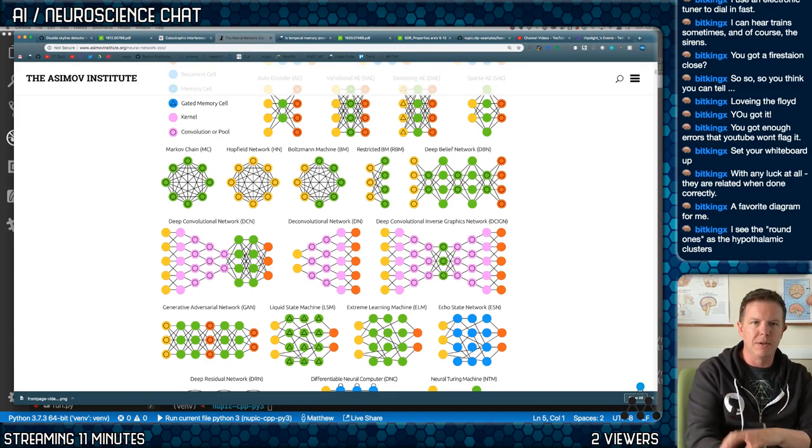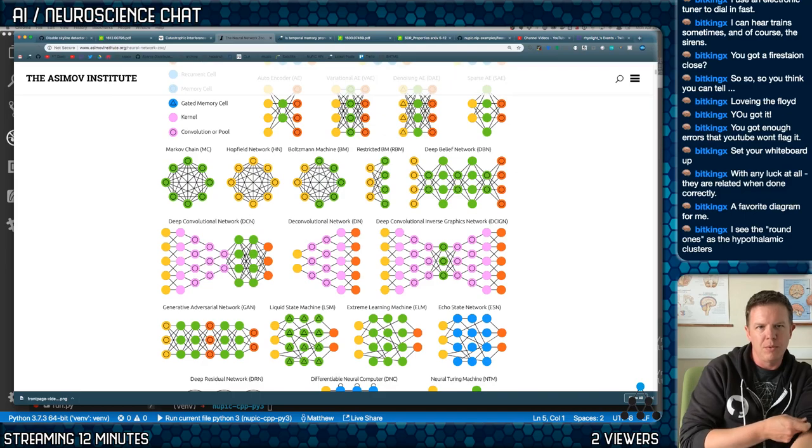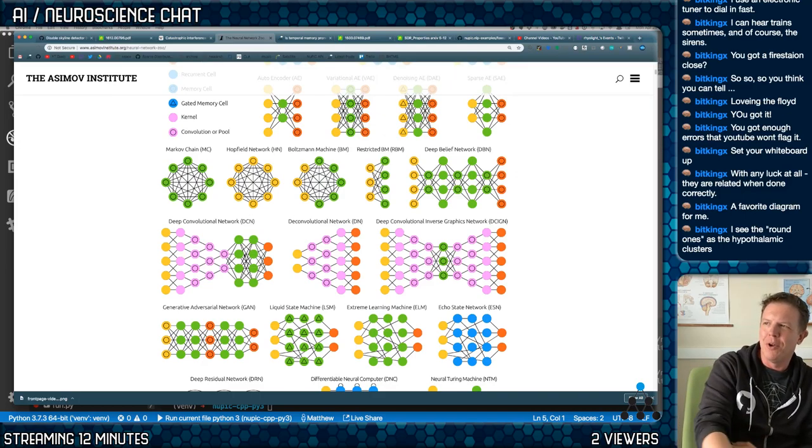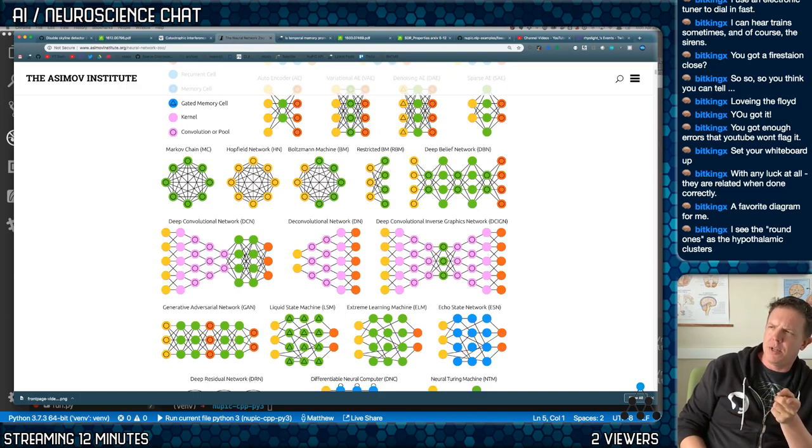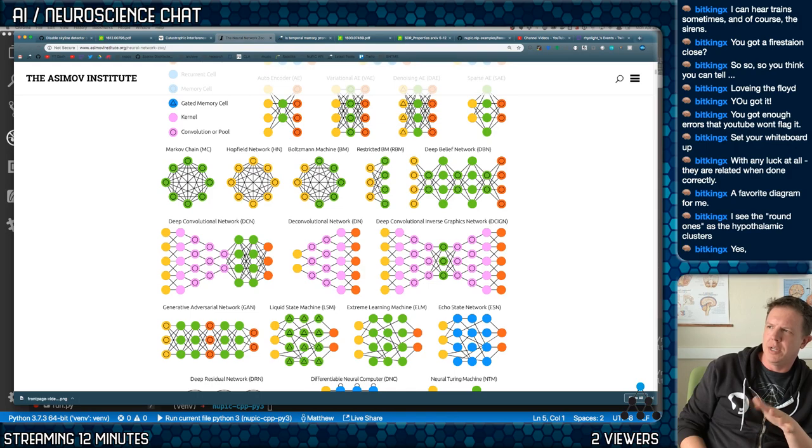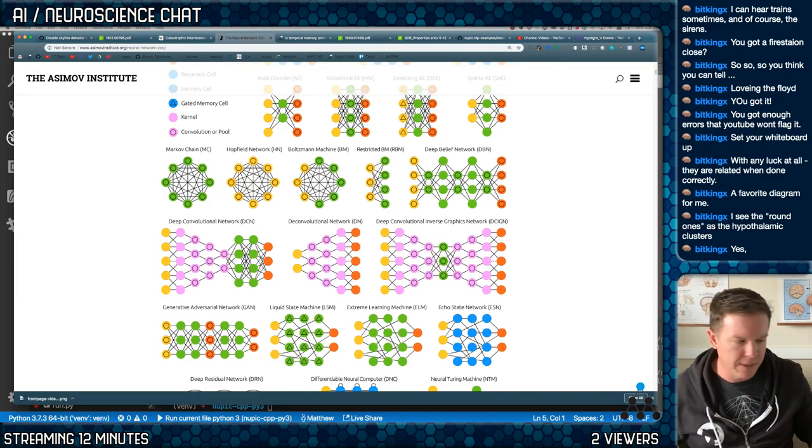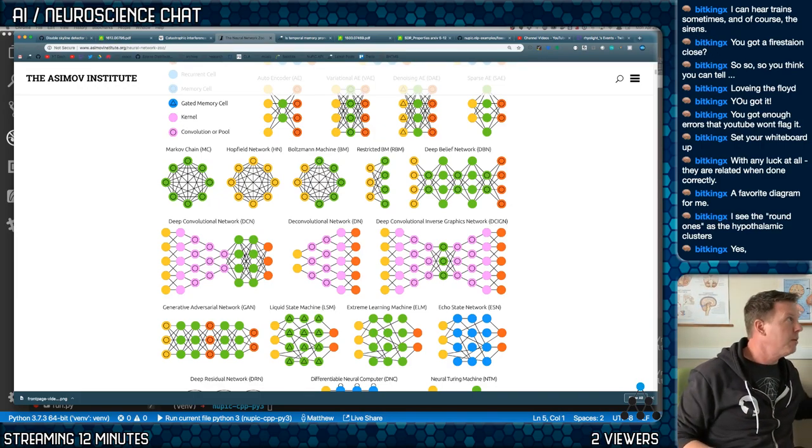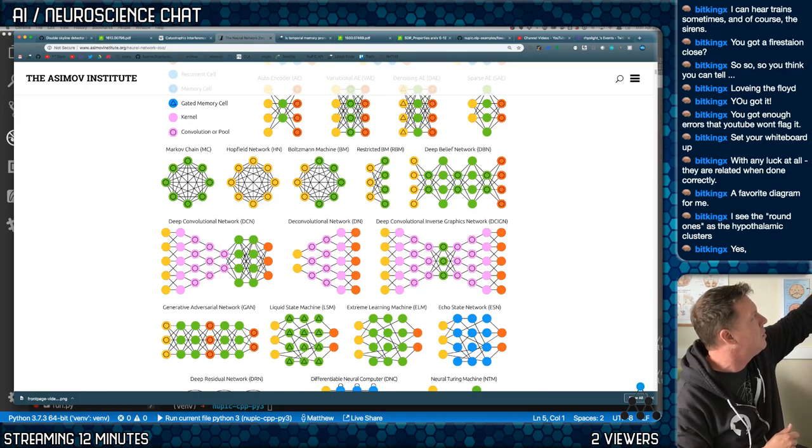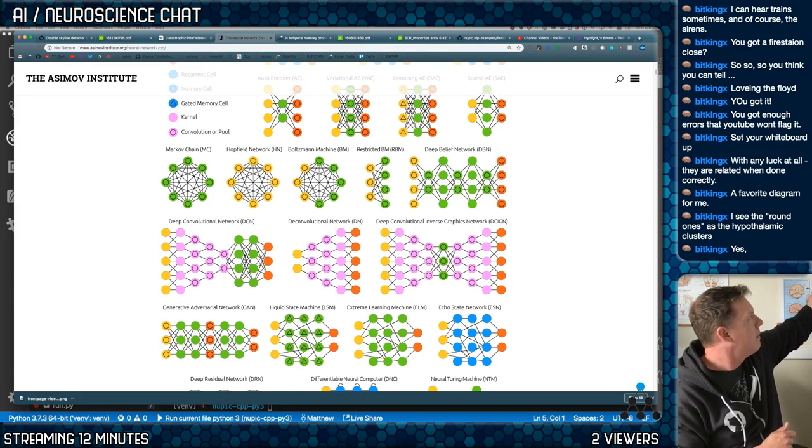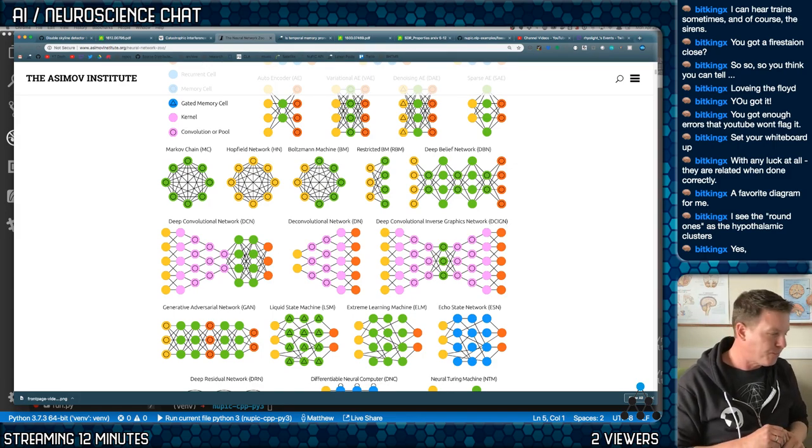But what you end up with on the right side here. Mark says he sees the round ones as the hypothalamic clusters. They're all round. Oh, those, the Hopfield networks, right? The Markov chains. Interesting. I'll have to think about that. I know I heard you mention something about a Hopfield network or a Boltzmann machine. That would be a good topic for one of these AI chats in the future. I'm going to write that down. Because I'd love to really understand the Boltzmann machine or Hopfield network. Alright, I wrote that down. Okay, anyway.